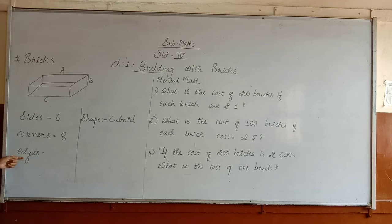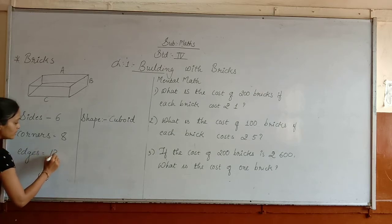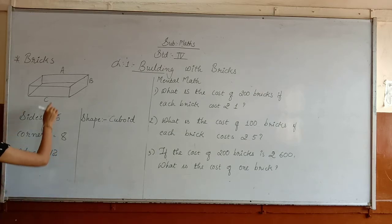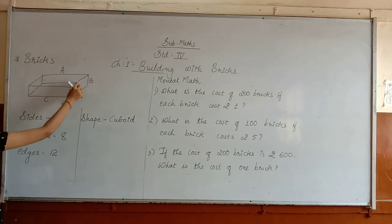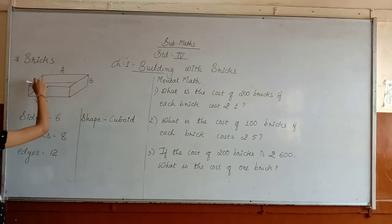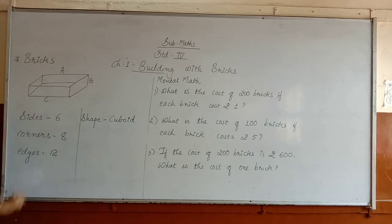Now edges. How many edges are there? You can see here: 1, 2, 3, 4, 5, 6, 7, 8, 9, 10, 11, and 12. There are 12 edges.